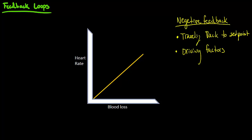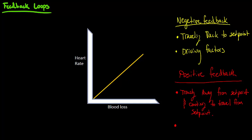Now let's talk about positive feedback. Positive feedback is pretty simple. It's whenever you're traveling away from setpoint and continuing to travel away from setpoint. A really easy way to distinguish if this is positive or negative feedback is to find out if your variable shows any signs of going back towards setpoint at all, if there's any driving factors. If there's not any driving factors in play, then it is positive feedback.